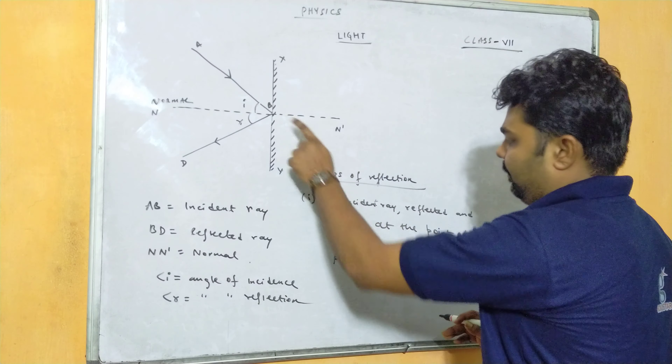Whenever any light falls on the mirror and it is completely reflected, none of the light is absorbed. So we say that this smooth surface is acting like a mirror. A flat, smooth, straight piece of glass that is silvered at its back surface is called a plane mirror.